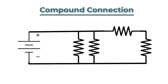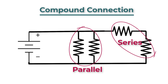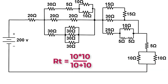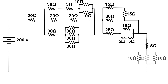A compound connection consists of series and parallel connections together. To get the total resistance, simplify the circuit by dividing it into series and parallel parts. In our example, those two resistors are in parallel, so R_total for those two resistors equals 10 times 10 over 10 plus 10, or 10 over 2, which equals 5 ohms.